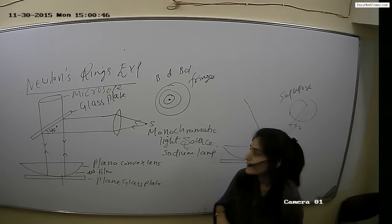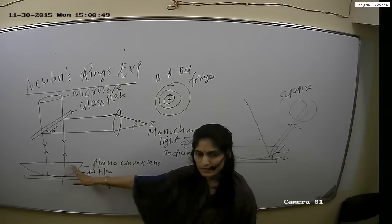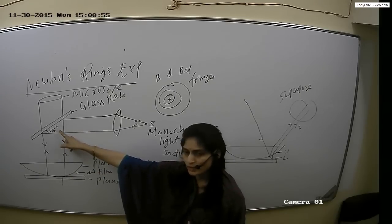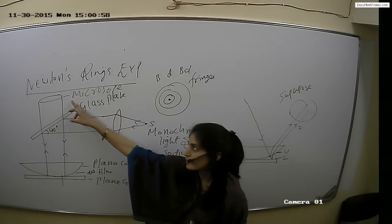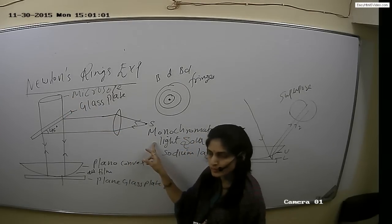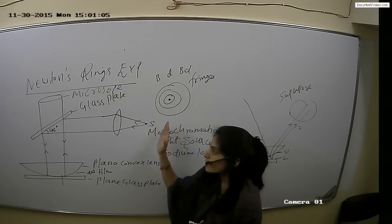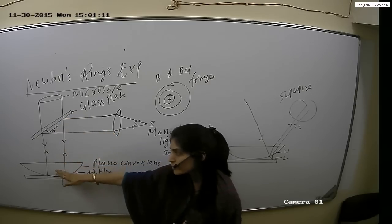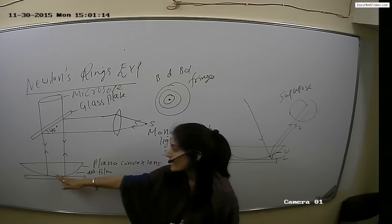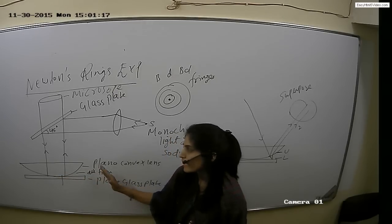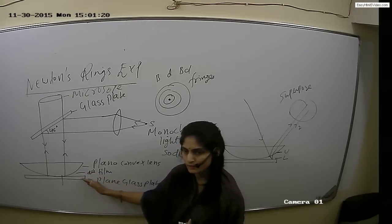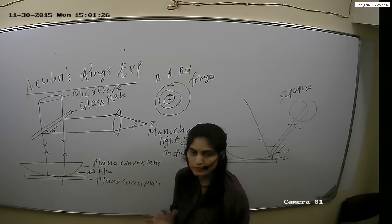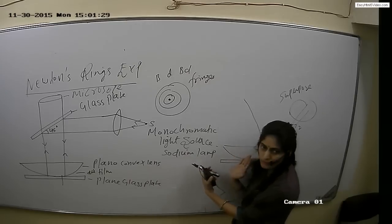Let me revise it again. In Newton's ring experiment, a plano-convex lens is placed on a plain glass plate. Another glass plate is placed at 45 degrees. A traveling microscope is used for observation, and a sodium lamp — the monochromatic light source — is used. When light from source S reaches the 45-degree glass plate, it is directed to the plano-convex lens and plain glass plate where an air film is formed. Light reflects from the upper and lower surfaces of the film, and we get interference.